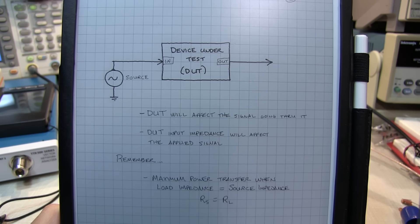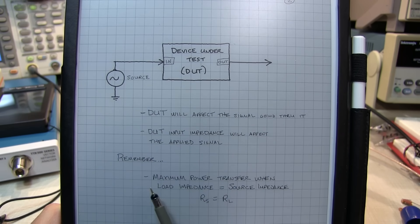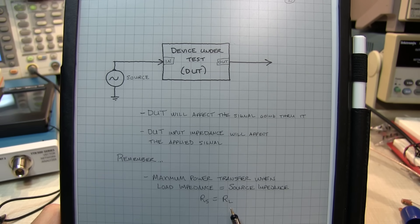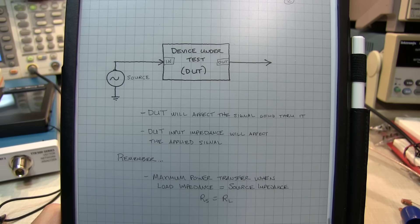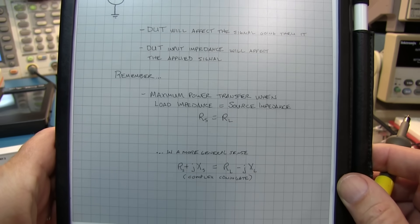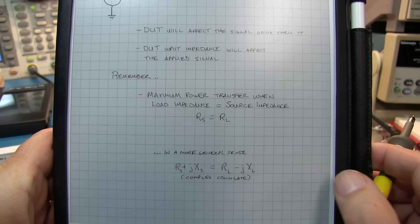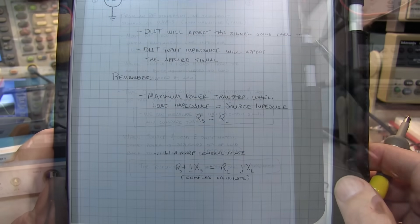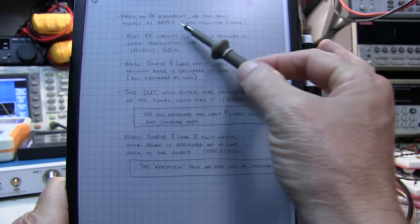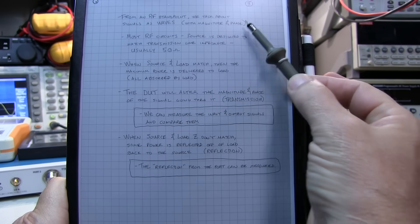One thing to remember is that maximum power transfer occurs when the load impedance matches the source impedance. It's typically shown as the load resistance and source resistance, because oftentimes we try to deal with non-reactive loads. But in a general sense, maximum power transfer will occur when the load and source have a conjugate match. When we talk about RF circuits, it's often handy to think of the signals as waves and talk about their magnitude and phase.